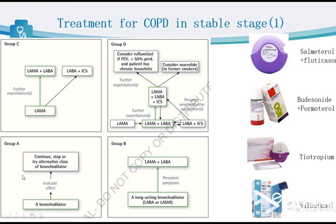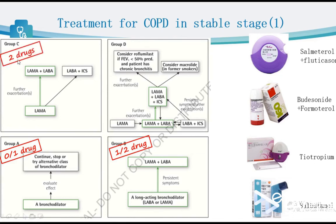Patients in groups A and B do not need ICS. In summary: Group A uses zero or one drug; Group B uses one or two bronchodilators; Group C usually uses two drugs, often including ICS; Group D usually uses two or three drugs, typically including ICS.